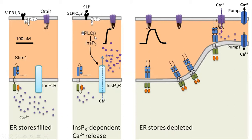When sphingosine-1-phosphate, the ligand for this receptor, binds, it activates phospholipase C, which causes breakdown of membrane lipids and generation of IP3 as a second messenger. IP3 travels to and activates the IP3 receptor on the ER membrane, causing store depletion and a calcium transient.